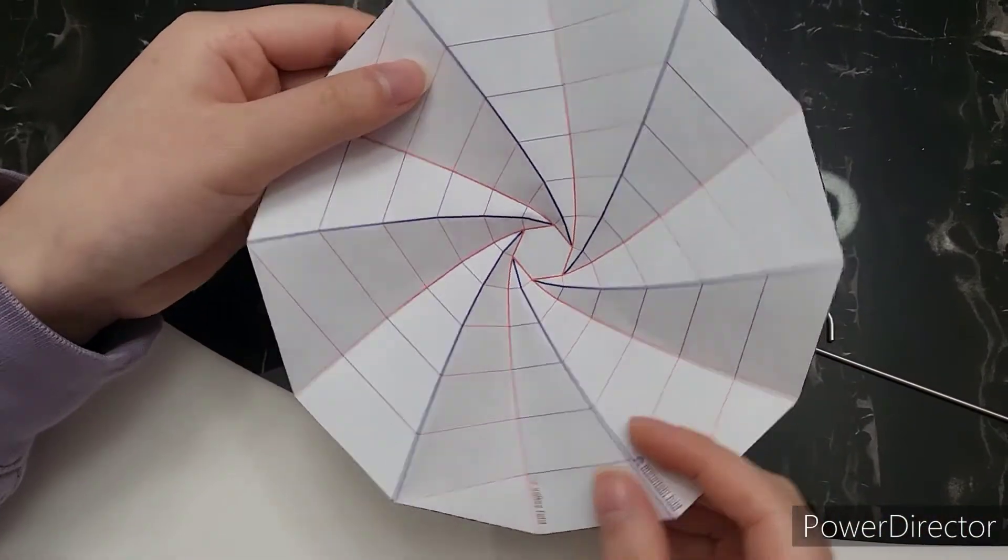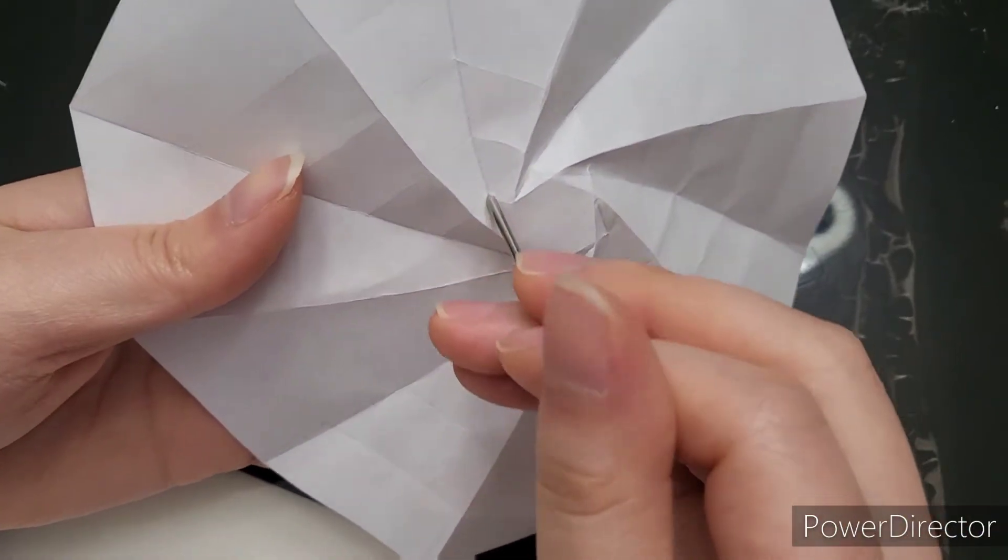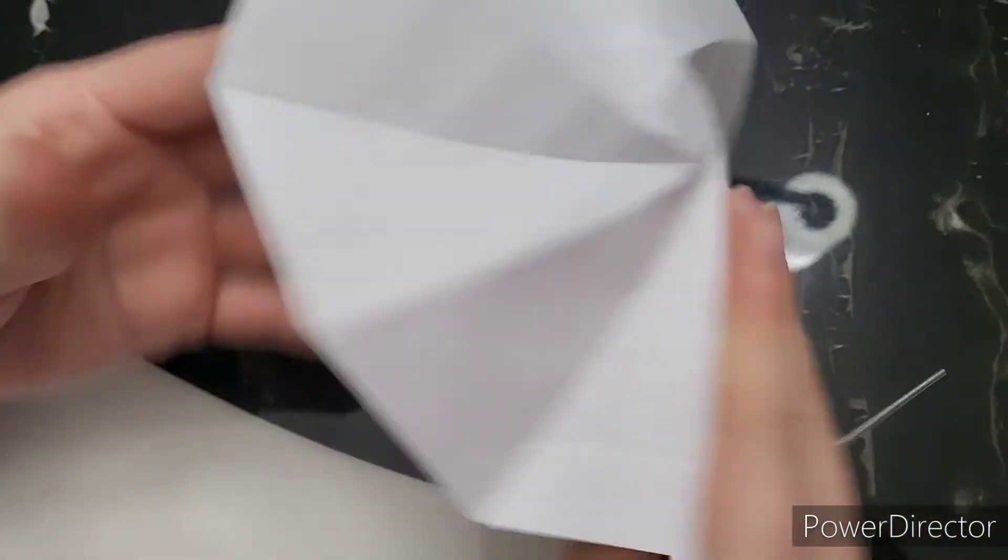Once you've finished scoring the paper, use a pointed tool to sharpen your creases. As you can see, I really emphasized the creases on the hexagon for the best results.